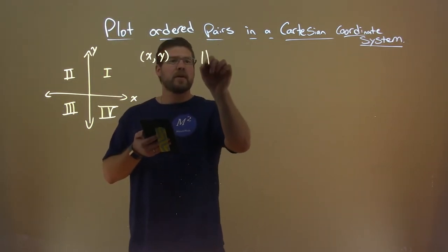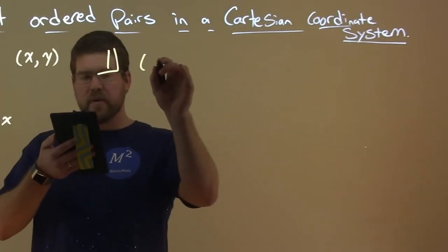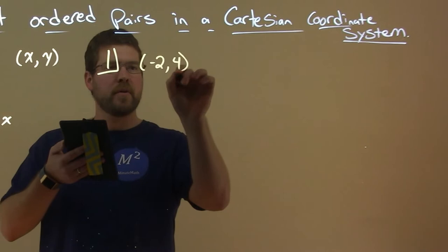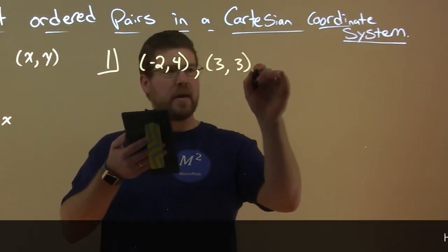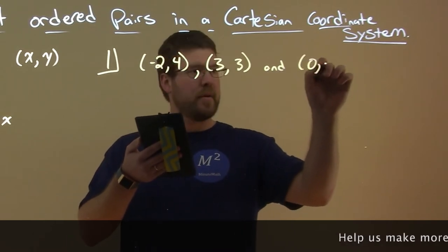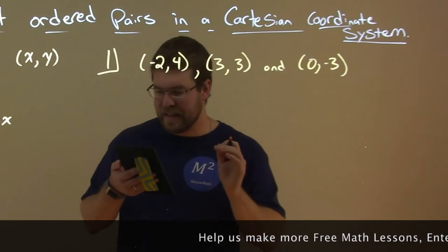Let's go with an example. Let's plot some points. We're given some points here: negative 2 comma 4, 3 comma 3, and lastly, 0 comma negative 3. We're going to plot these points in the plane.